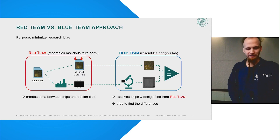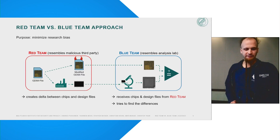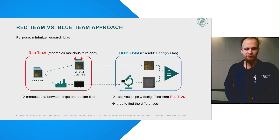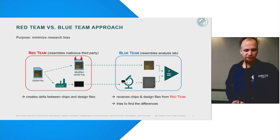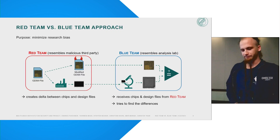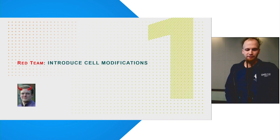So the red team used a trick here. Instead of inserting changes into the actual chips, they modified the design files instead, in a way that similar differences exist between the design file and the chip — thus closely emulating the original scenario without the need for a second expensive fabrication run. The previously manufactured chips and the manipulated design files were then handed to the blue team, which acted as an analysis lab aiming to detect the inserted manipulations.